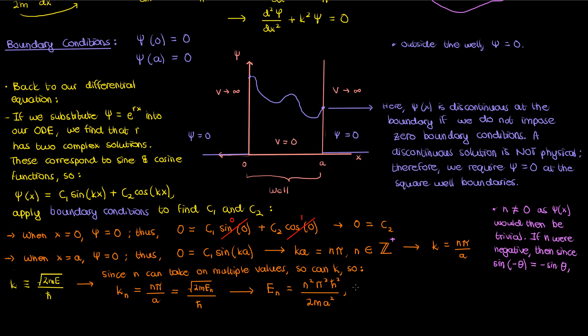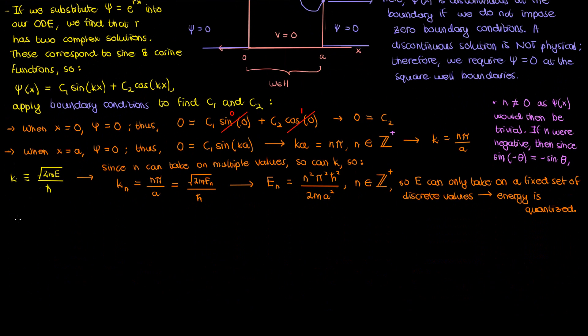However n isn't a continuous number, it's a positive integer which means that E can only take on a fixed set of discrete values. So a quantum particle in an infinite square well is restricted to certain energy levels corresponding to different values of n. Energy is no longer continuous like it is in classical mechanics. Here energy is discrete, it is quantized. That's what this equation means and it's quite important to recognize this for quantum mechanics.